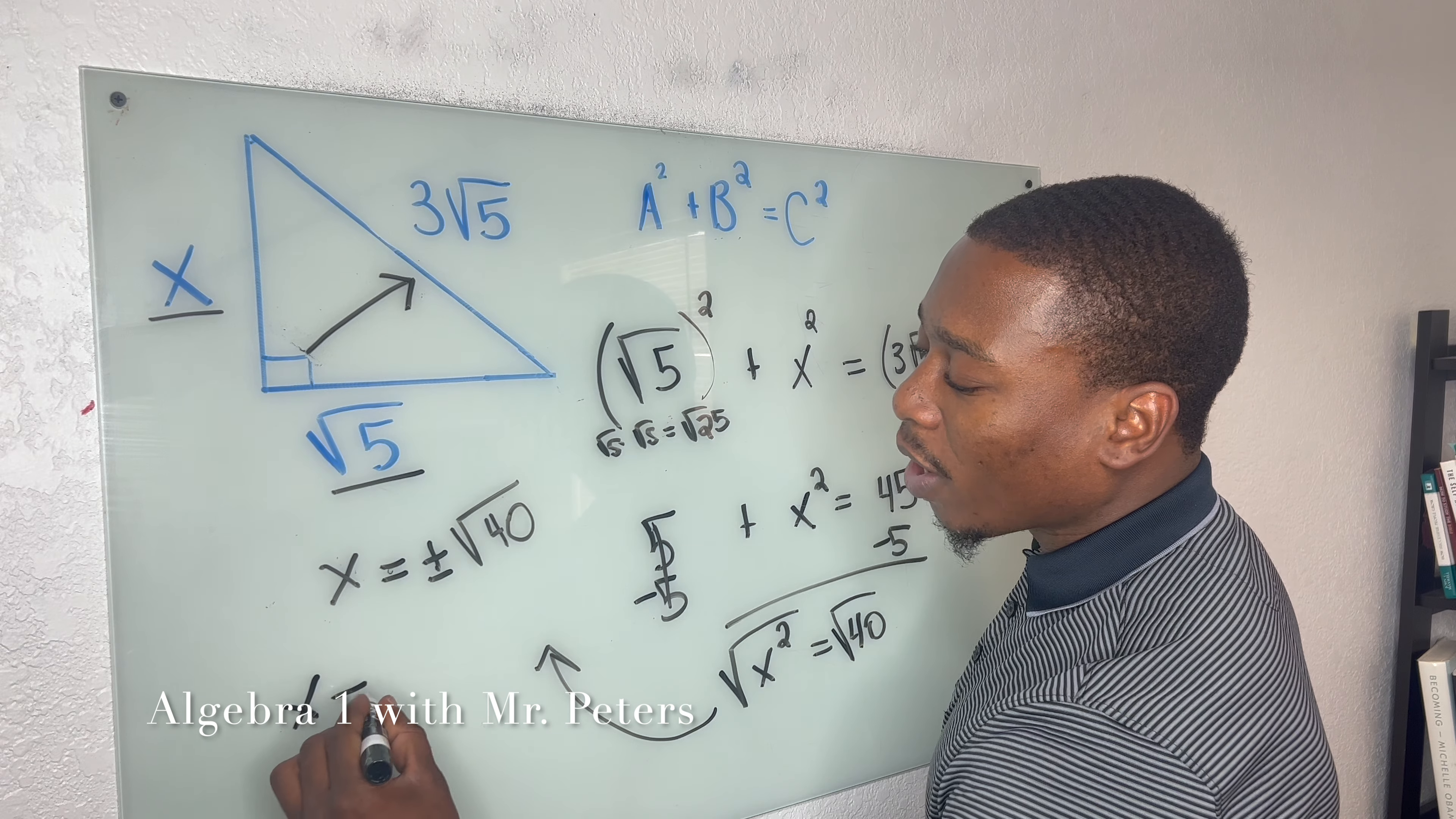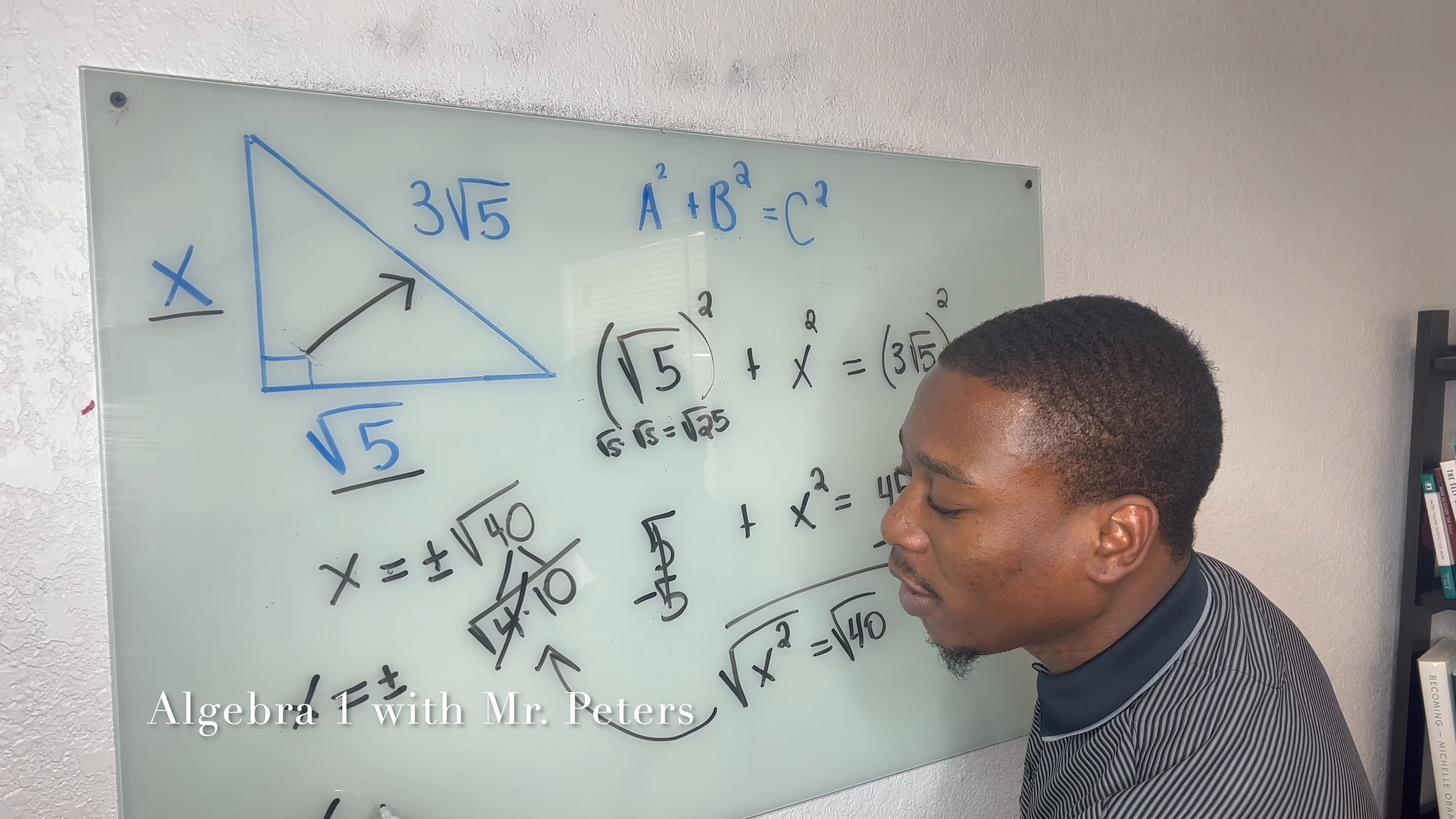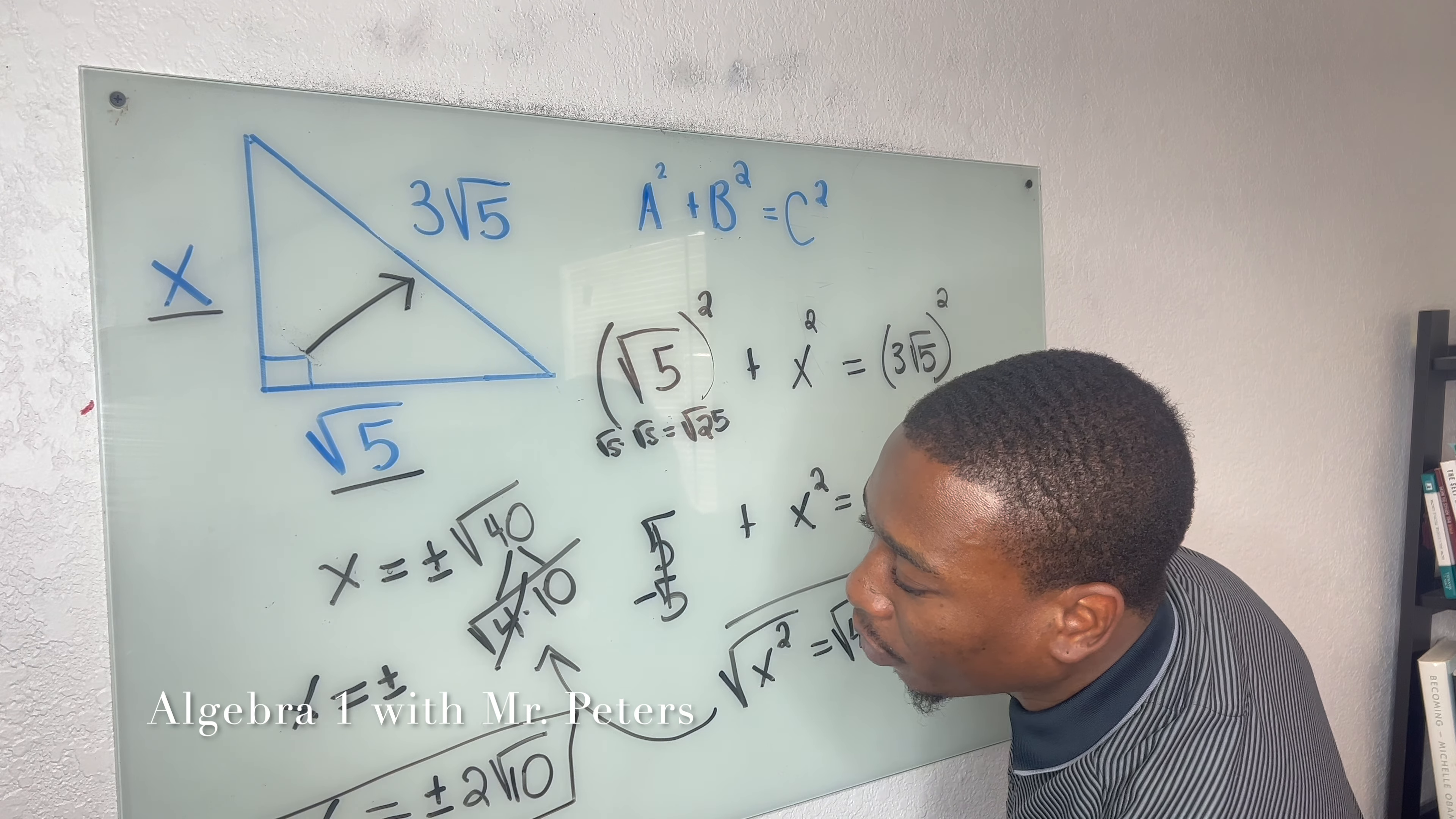When we break this radical down, this is going to turn into 4 times 10. We know that 4 is a perfect square. So once we simplify, we would have x is equal to plus or minus 2 radical 10.